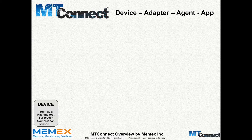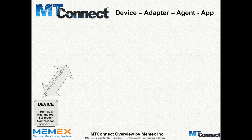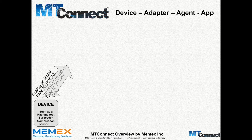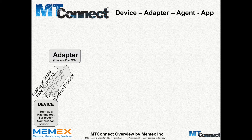We have the device, which could be a machine tool, but it could also be a bar feeder, a compressor, a sensor, a garage door opener, a light, or an amperage meter. Literally anything could be MT Connect enabled. The developer has to figure out how to get the information — is it ones and zeros, FANUC Focas, FANUC IO link, OPC, an analog or digital signal, or perhaps some proprietary protocol? The adapter is hardware and/or software that speaks to the device and gathers all of this information.